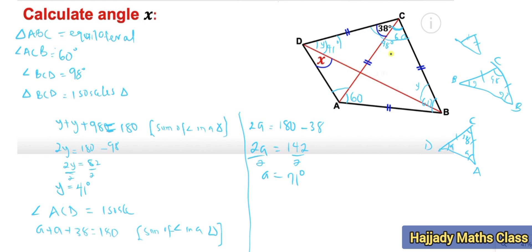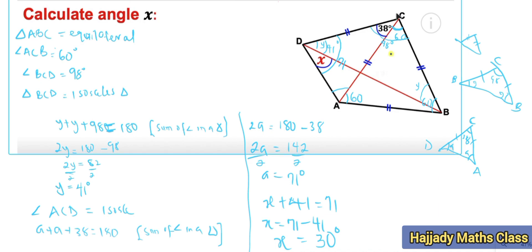The total angle at D in triangle ACD is 71 degrees. Since this consists of x and 41 degrees (from the isosceles triangle BCD), the addition of x and 41 must equal 71. So x equals 71 minus 41, which gives x equals 30 degrees. That is our final answer. Thank you for watching — please kindly subscribe to my YouTube channel. See you in the next video!